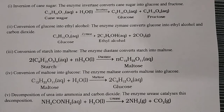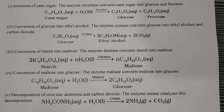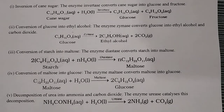Fourth: conversion of maltose into glucose - maltose undergoes hydrolysis in the presence of maltase. Notice that all enzyme catalysts have the suffix '-ase': invertase, zymase, diastase, maltase, urease, oxidase, reductase. Fifth: decomposition of urea - urea in the presence of water and urease converts into ammonia and carbon dioxide.